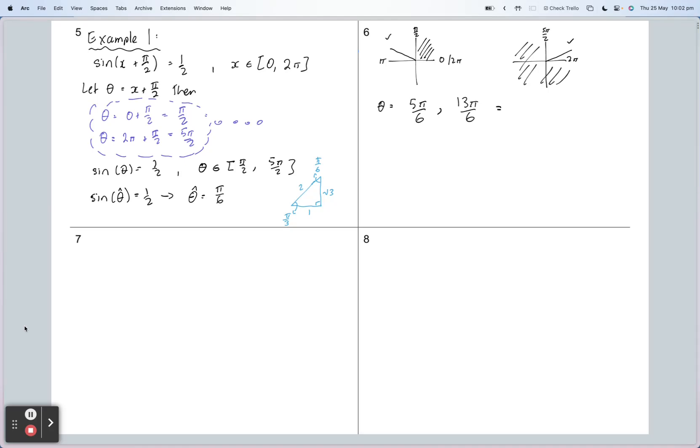This is when we convert back. We originally had theta equaling x plus π/2, which means these two values must also equal x plus π/2. Now we just need to solve for x because that's the original question. That's just as simple as subtracting π/2 from this side and subtracting π/2 from each of our solutions here. I'm just going to put x on the other side because it makes more sense to read left to right that way.